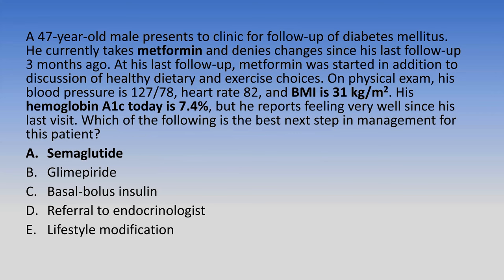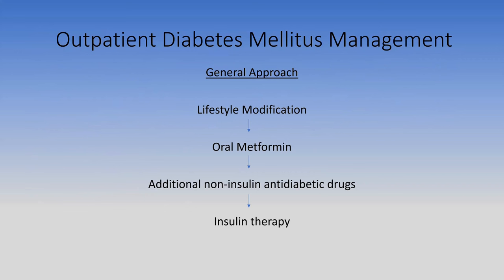The answer is semaglutide. He's already on metformin—usually the first medication choice—he's obese with a BMI of 31, and his A1c still isn't at goal after six months. In diabetes management, you start with lifestyle modification, then add oral metformin, then add non-insulin anti-diabetics if still not at goal, and proceed to insulin thereafter. Basal-bolus insulin was too extreme at this step, and lifestyle modification alone is insufficient given the situation.